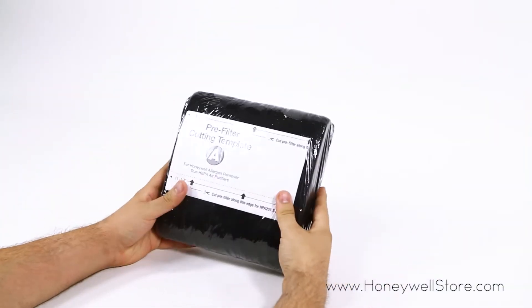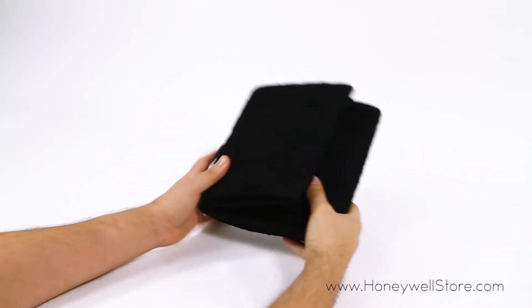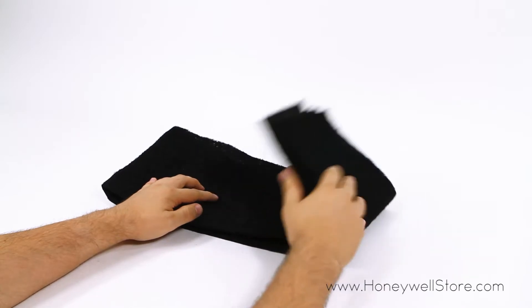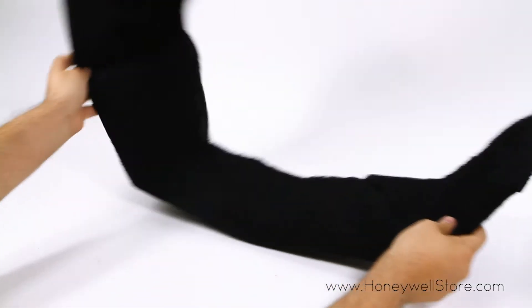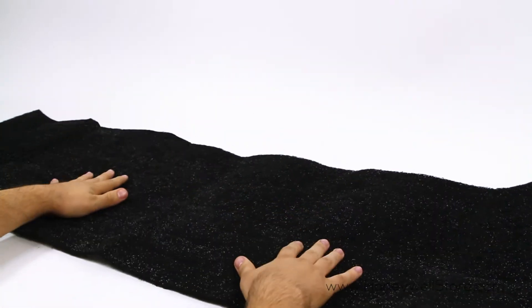This pre-filter captures lint and fibers, pet hair, dust and pollen, reduces household odors from pets, tobacco and cooking smoke, and absorbs fumes from cleaning products, trash and harmful VOCs such as ammonia.